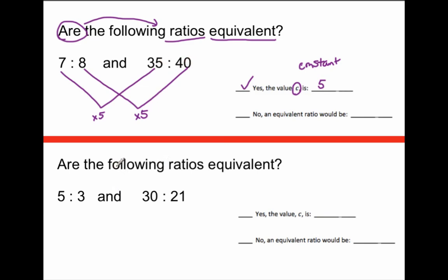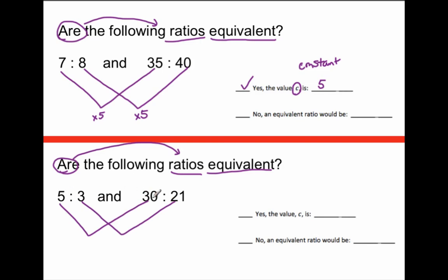Let's go to the next problem. Are the following ratios equivalent? Is there a positive number that can multiply both quantities of the first ratio to equal corresponding values in the second ratio? Let's match up our corresponding quantities — first to first and second to second. Five times what gives me thirty? Five times six gives me thirty. Three times what gives me twenty-one? Three times seven gives me twenty-one. Are they the same positive number? They are different. So, are the following ratios equivalent? No, they are not equivalent. Why? Because there is no value c that multiplies both quantities of the first ratio to give you corresponding values of the second ratio.